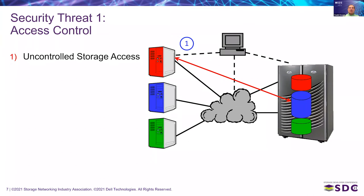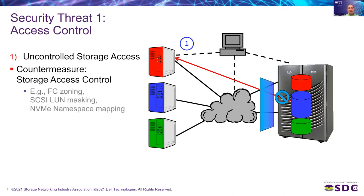Let's look at security threat one, specific to SANs: uncontrolled storage access — the red host tries to access the blue storage. The countermeasure is storage access control. In Fibre Channel this is called zoning; in SCSI it's called LUN masking; in NVMe we have namespace mapping. This limits access on the fabric and on the storage array itself, so that only the blue host can access the blue storage partition.